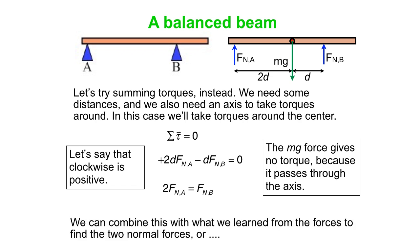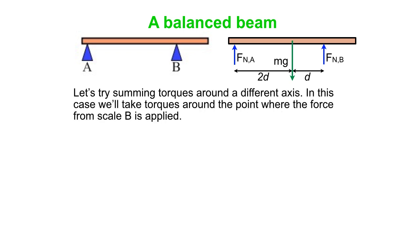We can combine this, what we learned from the forces, to find the two normal forces. Or let's try torque, doing torques around a different axis. So we'll take torque around the B, where this B scale is. That gets rid of FnB from our torque equation, which is useful.